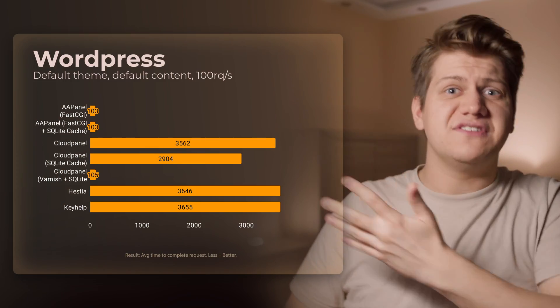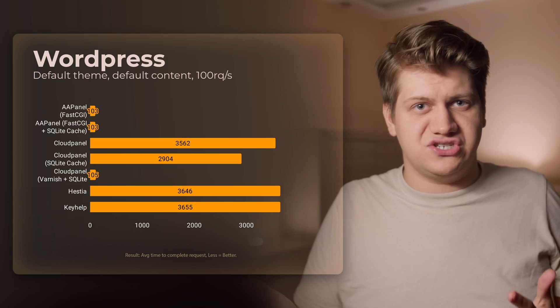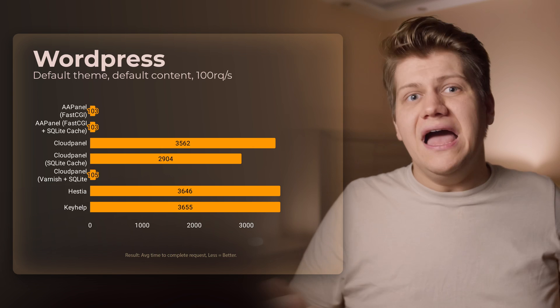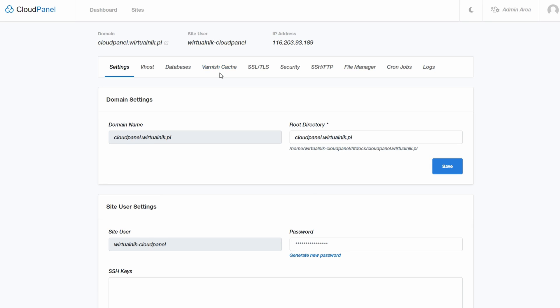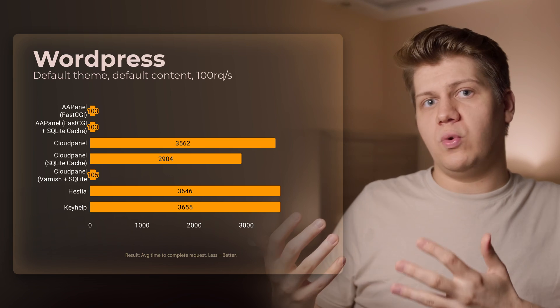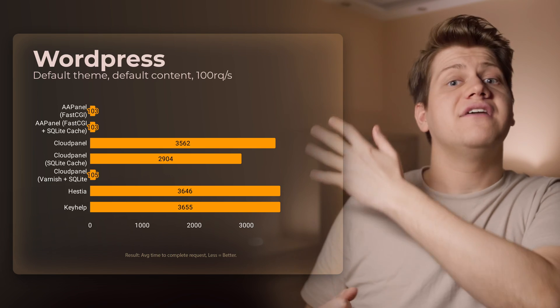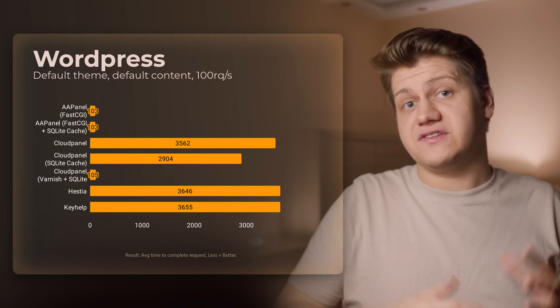I decided to install SQLite object cache on all of them, but Hestia and KeyHelp don't have support for SQLite extensions, so that's unavailable. In those two control panels there's also no easy way to install an alternative database for object caching such as Redis — so I don't think they're great for beginners. Cloud Panel has Varnish cache, and enabling it with one click in the GUI puts it on par with AA Panel's FastCGI caching.